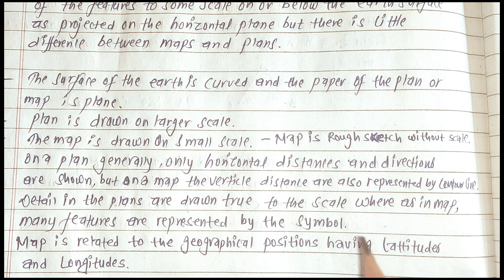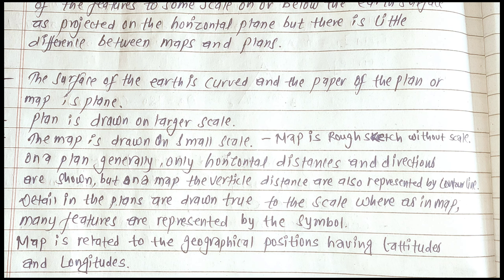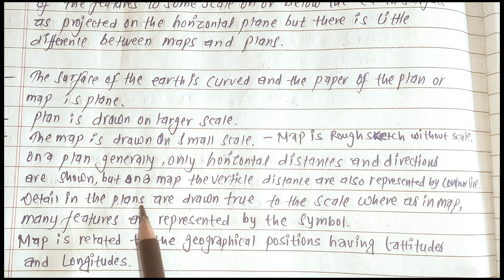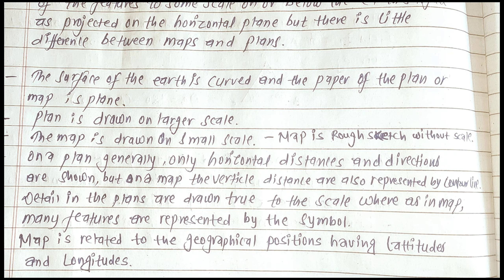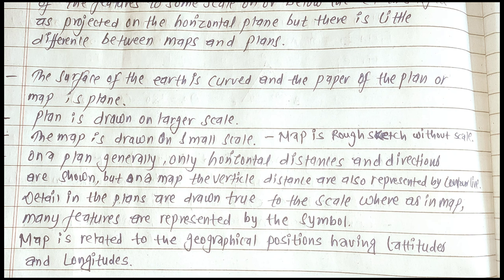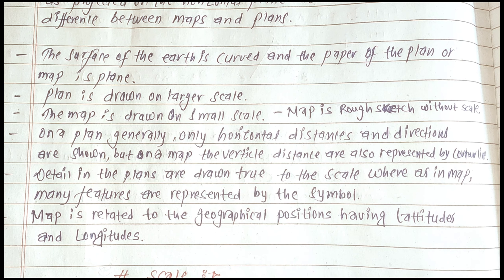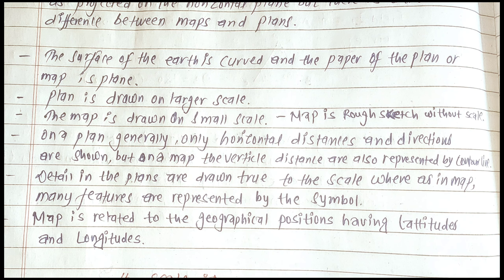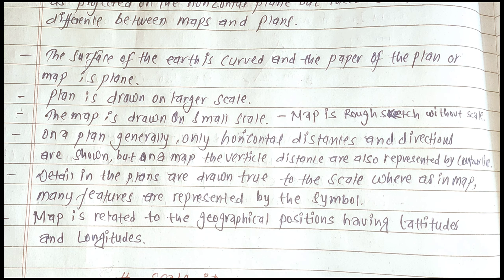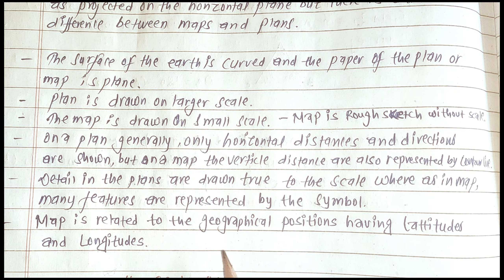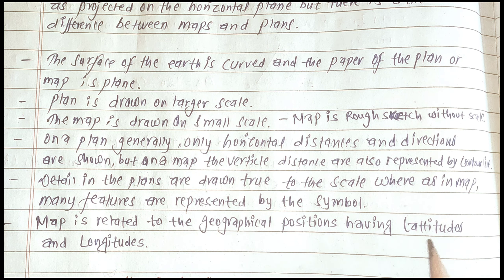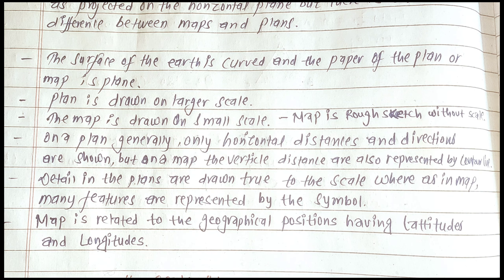Vertical distance in a map is represented by contour lines. Details in plans are drawn true to scale, whereas in maps many features are represented by symbols. A map is related to geographical position having latitude and longitude.